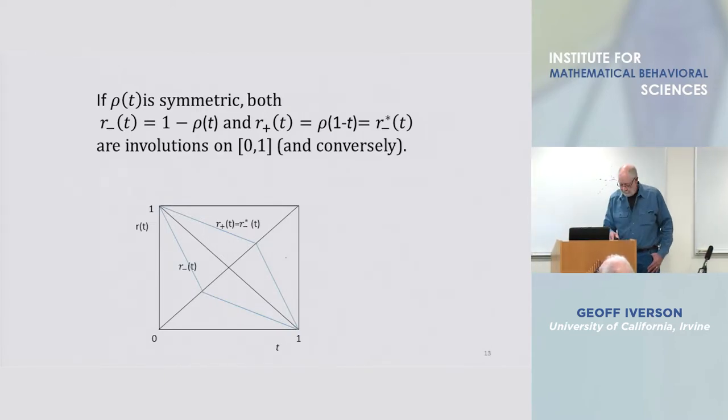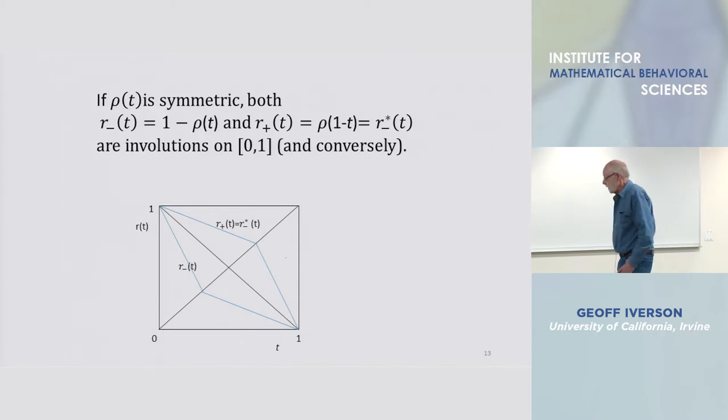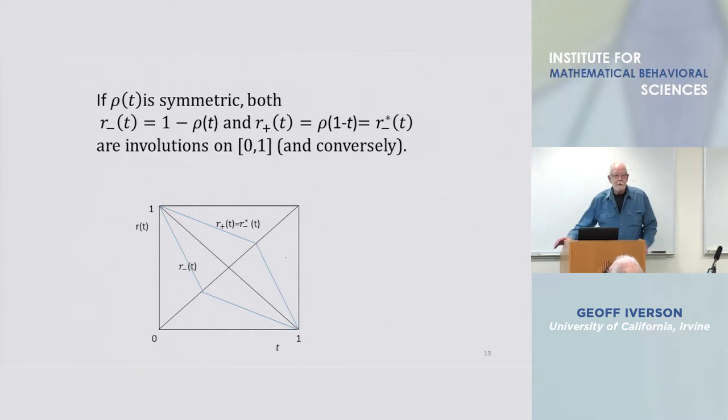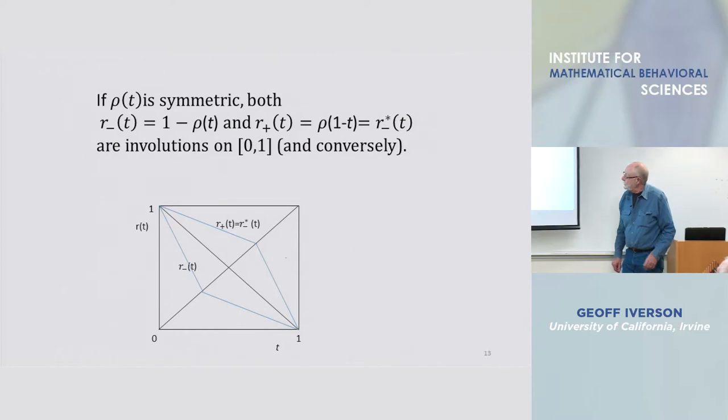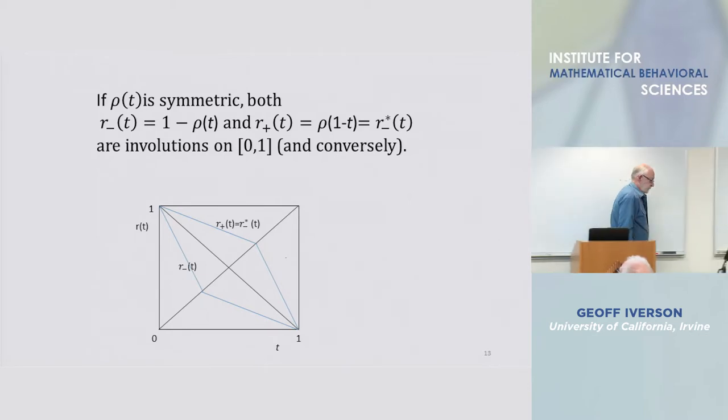If you have a symmetric ROC, then those other functions that I briefly mentioned, r plus and r minus, turn out to be involutions. And all that means is in each case they are their own inverse, so they behave